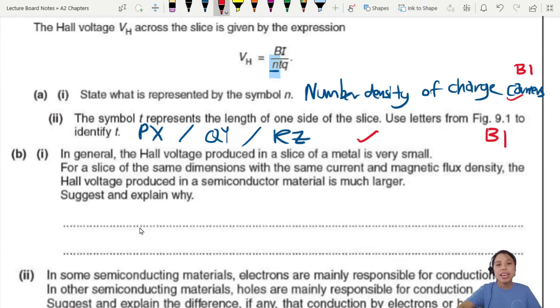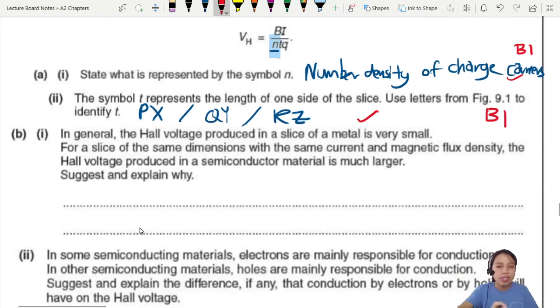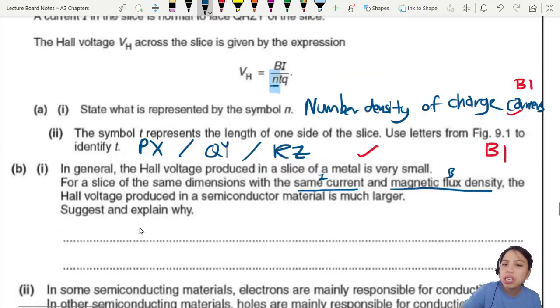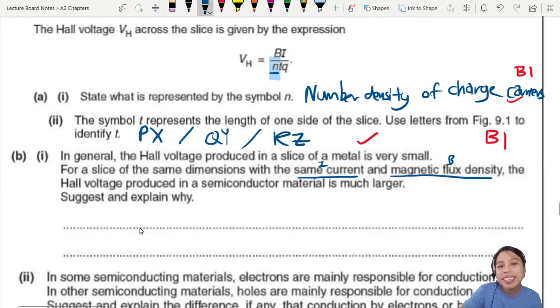In general, the Hall voltage produced in the slice is very, very small. For a slice of the same dimension, same area, same length, same thickness, with the same current, same magnetic flux density, the Hall voltage produced in the semiconductor is much larger. Why? Suggest and explain why.